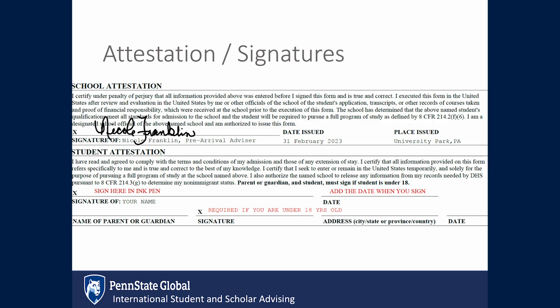The signature section at the bottom of the document will have the school official signature and the date which your I-20 was issued. Once you print your document, you should sign in ink pen and then add the date when you sign. A parent or guardian signature is required if you are under 18.